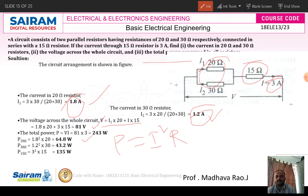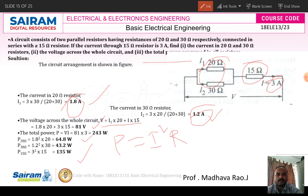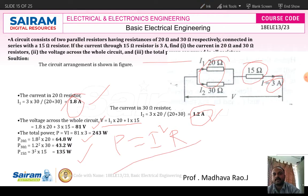So this is the first problem. We calculated the current in the 20 ohm and 30 ohm resistors using the current division principle, found the voltage across the whole circuit as 81 volts, and calculated the total power consumption using the I²R formula.